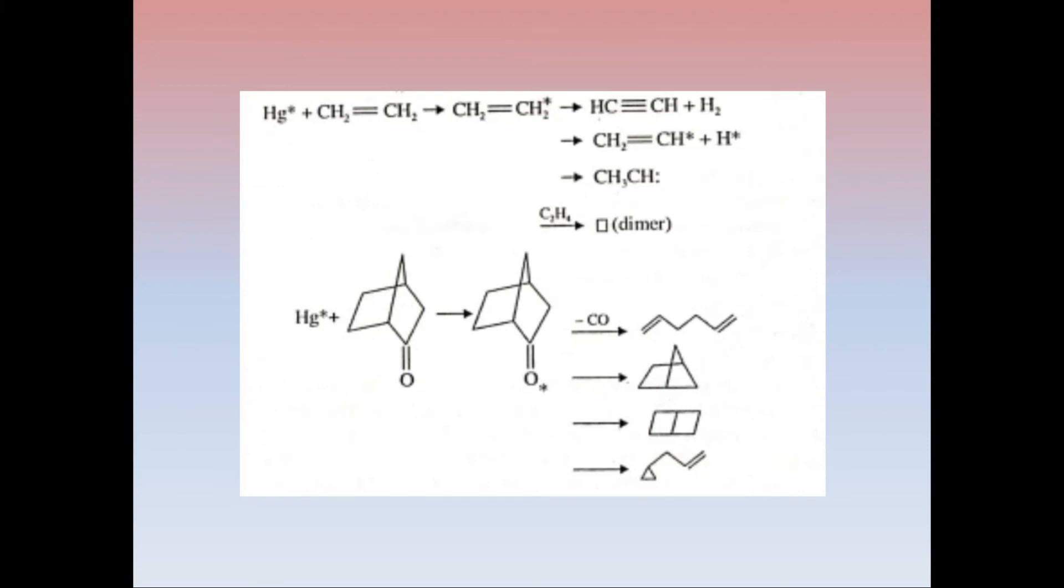These are the reactions where mercury acts in photosensitizing reactions. Mercury reacts with alkene and there is formation of different unsaturated products and also cyclic dimer formation like cyclobutane. Similarly, mercury reacts with bicyclic compounds and forms other cyclic products.